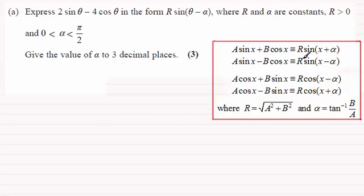r is always the square root of a squared plus b squared, and α is the inverse tan of b over a.